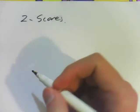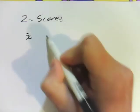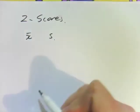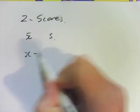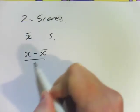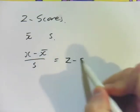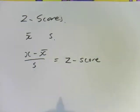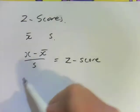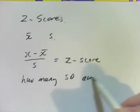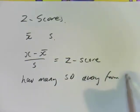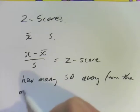The z-scores are all about comparing two different sets of data using the standard deviation and the mean. There's a very simple formula for working this out: x minus x bar divided by s, that equals your z-score. So this z-score actually means it's working out how many standard deviations away from the mean a value is.